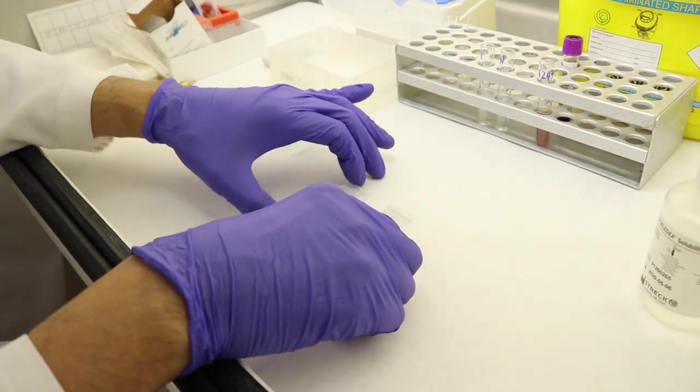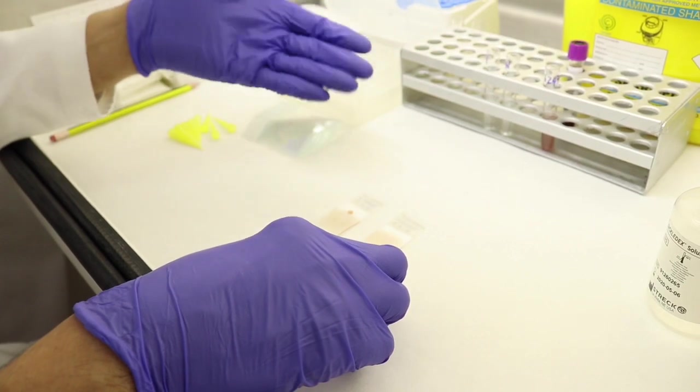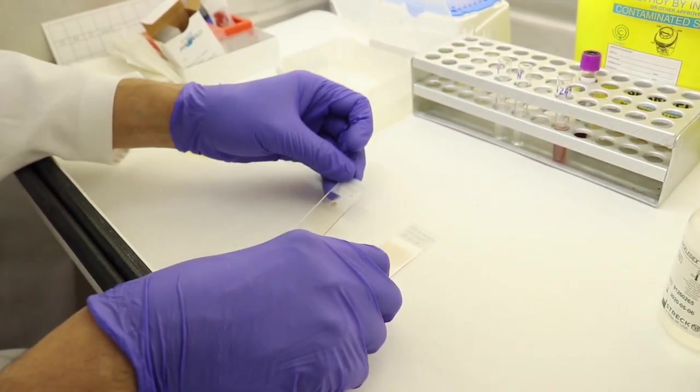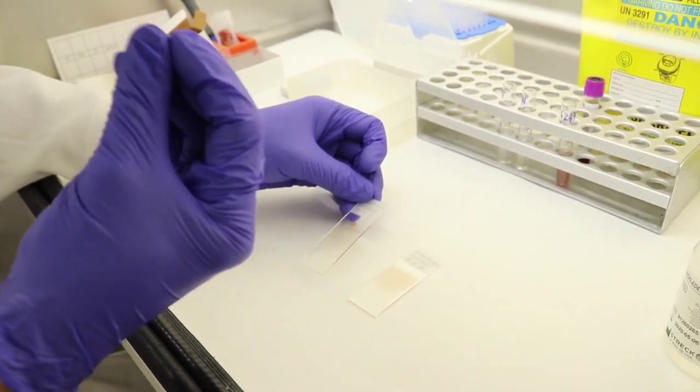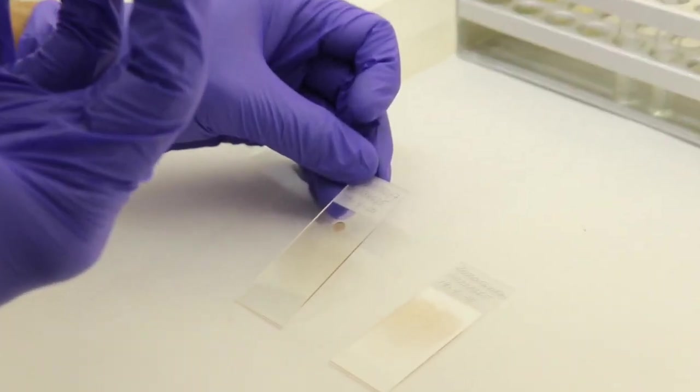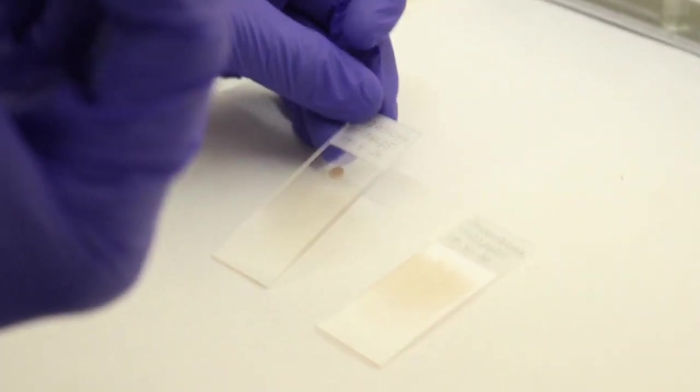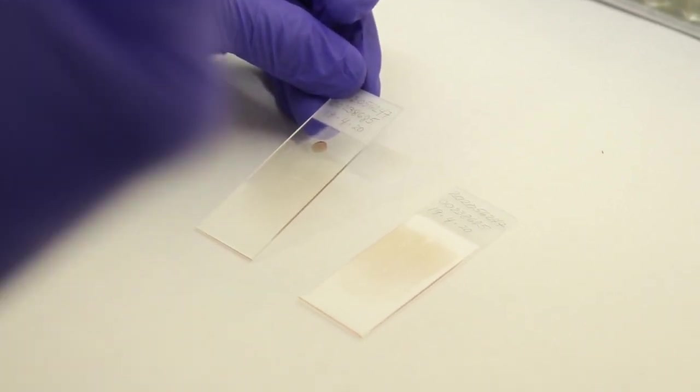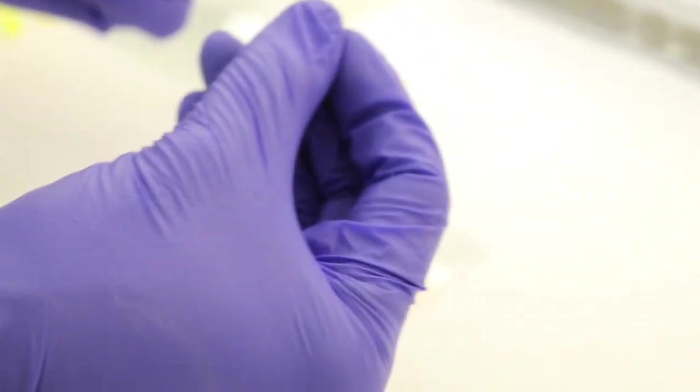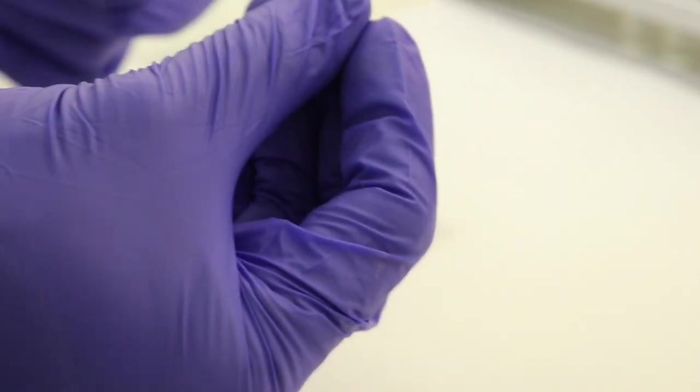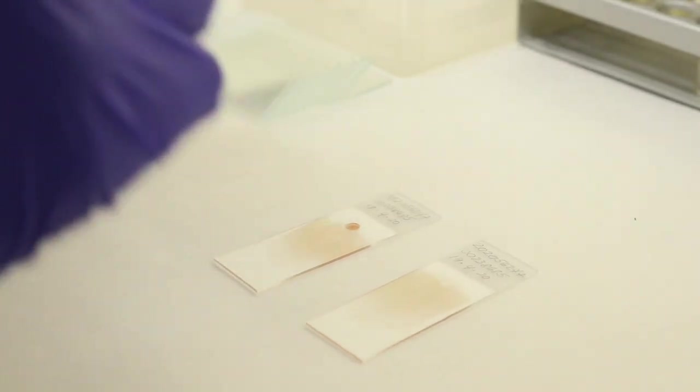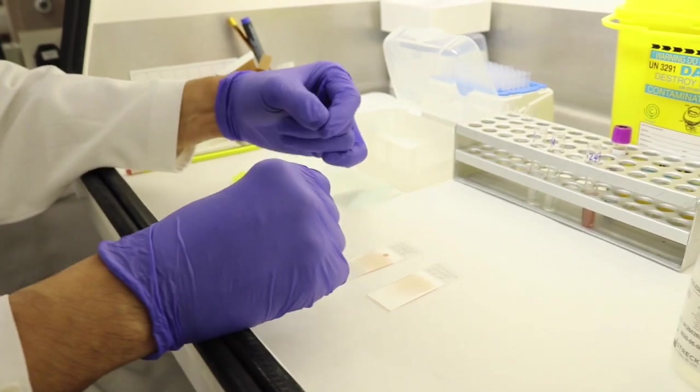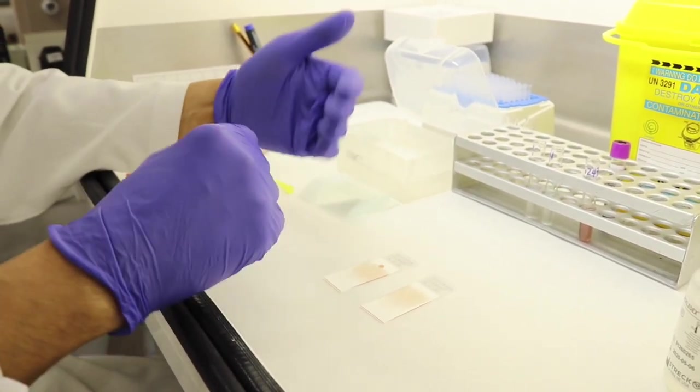The next procedure that we usually do in the lab is making a thin blood film. We do this because we want to see the morphology or the shapes of the blood cells. We stain them, and by looking under the microscope, we can see whether you have abnormal or normal cells. We do this to screen for abnormal cells that will help the doctor diagnose or identify blood diseases.